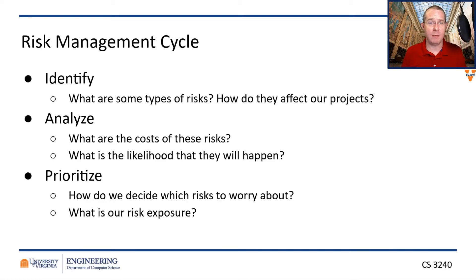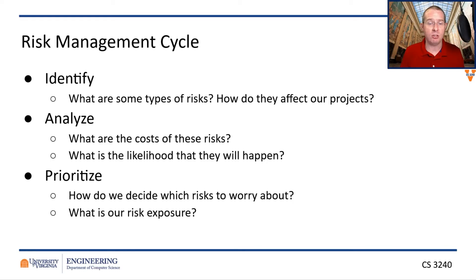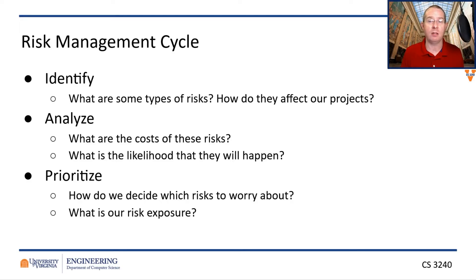So how do you manage this? There is the risk management cycle. First, identify the risks. What are some things that could potentially happen? Someone could drop. Someone might not know Python at the beginning and has to learn it. Someone could get sick. All these things are things that could happen, so identify those risks.